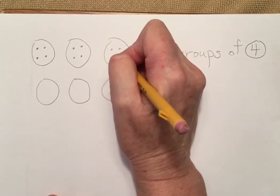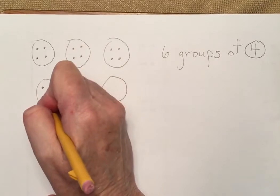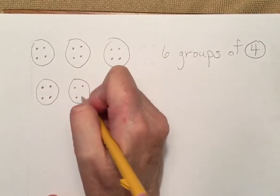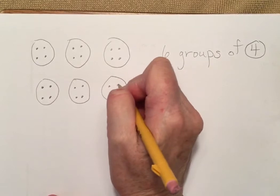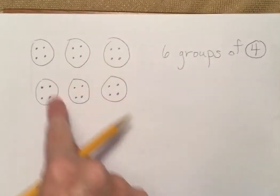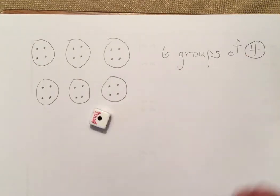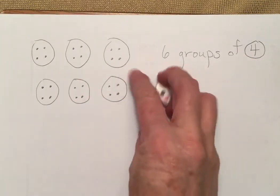Now remember, when we are arranging our stars inside our groups, it's super important to do it just like a die so that your brain can automatically recognize the quantity. Your brain does not have to count — it recognizes automatically that quantity.